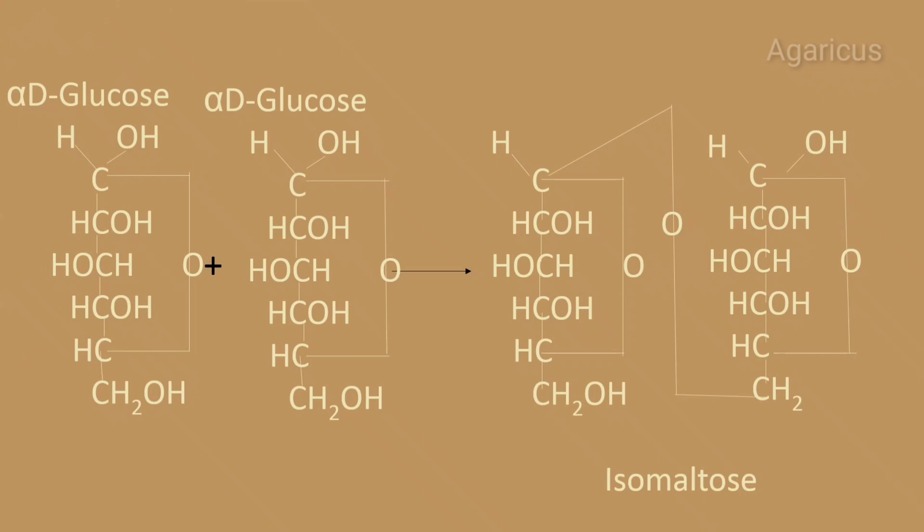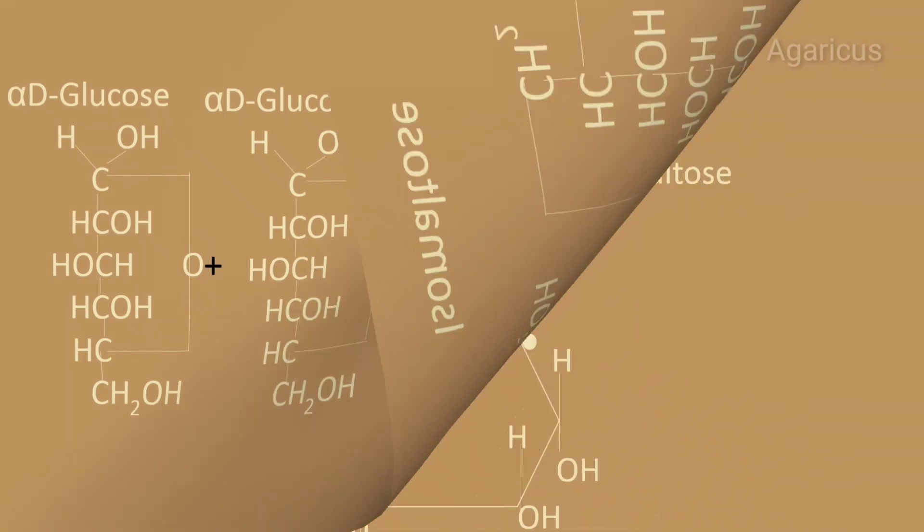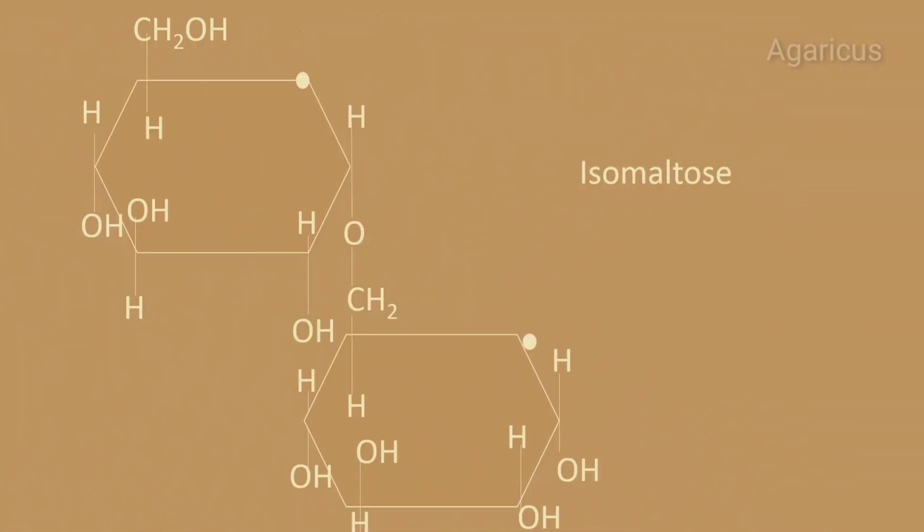Here is the structural formation of isomaltose. Two alpha-D glucose units combine to form isomaltose. Here is the Haworth projection. 1-6 linkages are used in isomaltose.